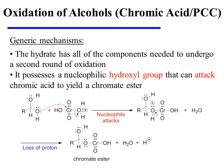The hydrate has two critical components that allow it to undergo a second round of oxidation. It possesses nucleophilic hydroxyl groups, and it also possesses one more hydrogen on the carbon bearing those hydroxyl groups. One of the two hydroxyl groups can attack chromic acid, yielding a new chromate ester after the loss of a proton.